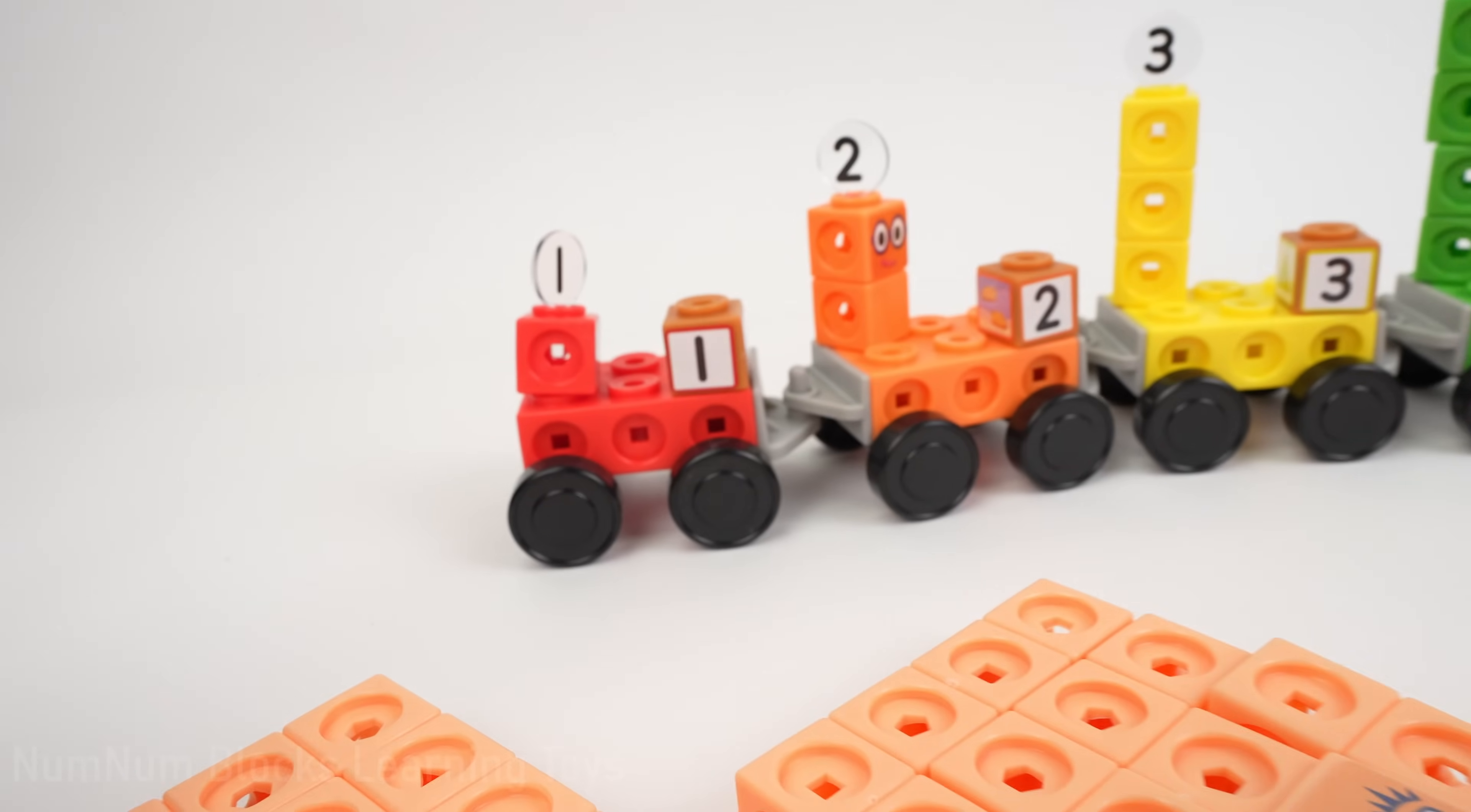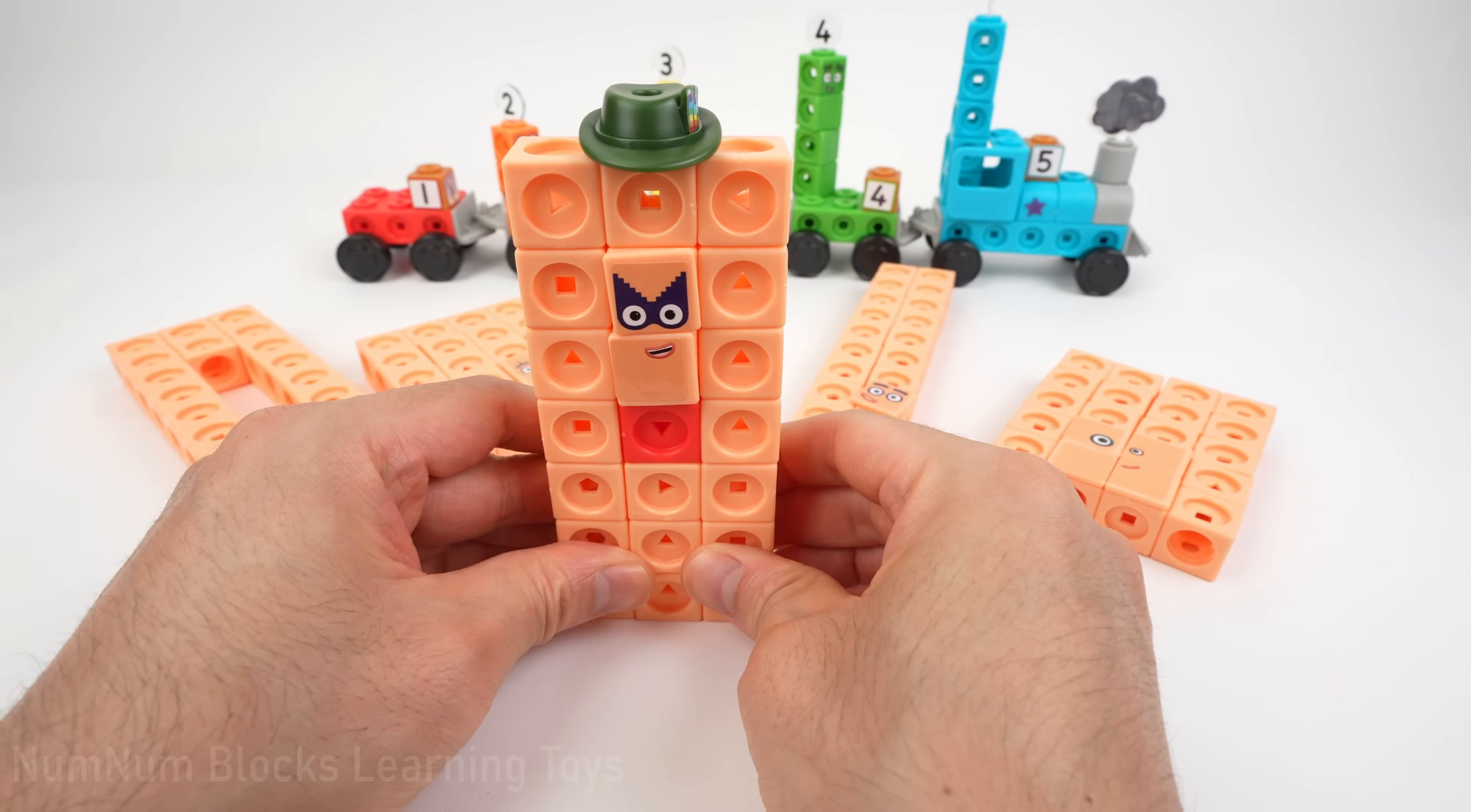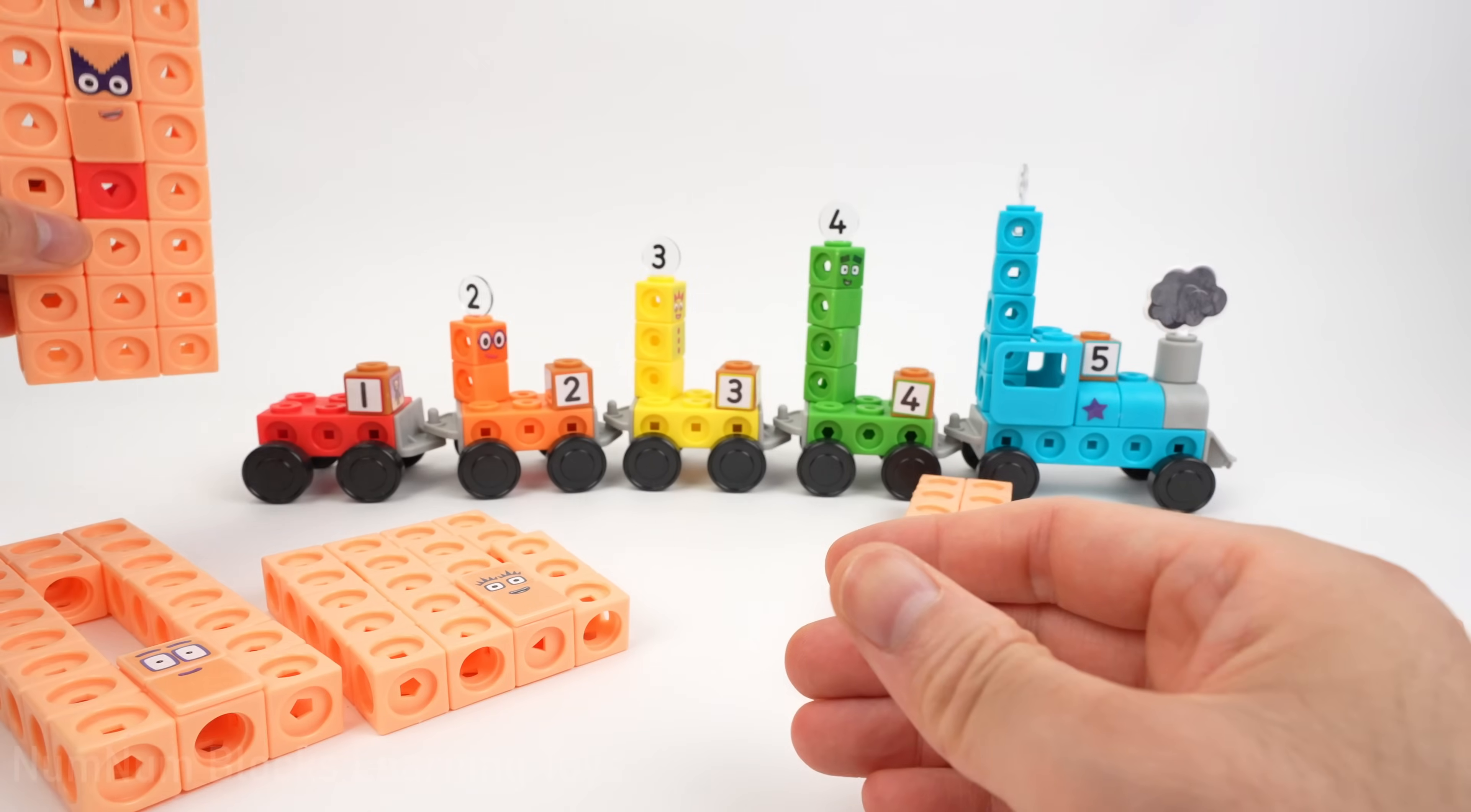To get to 21, we need to add 1 to 20. Let's take this red block and place it in the middle. There we go. Now there's only one thing missing - the numberling. She's complete. It's 21. Let's place 21 next to the 1 train.